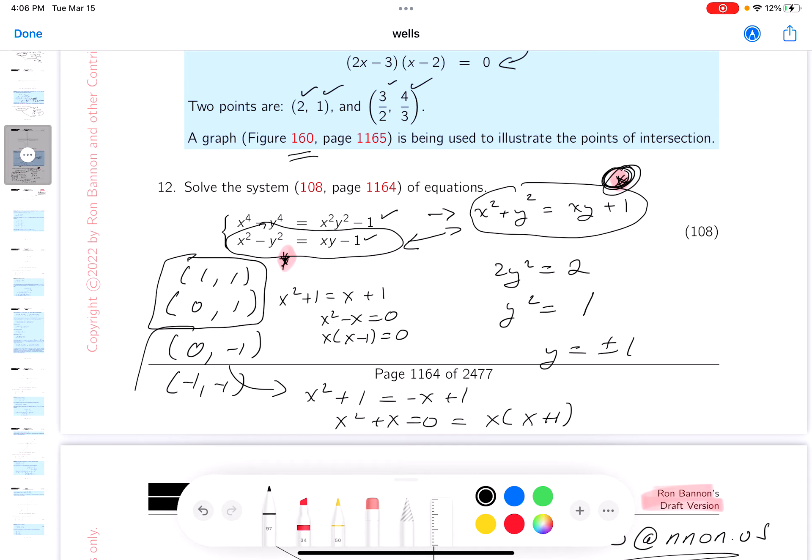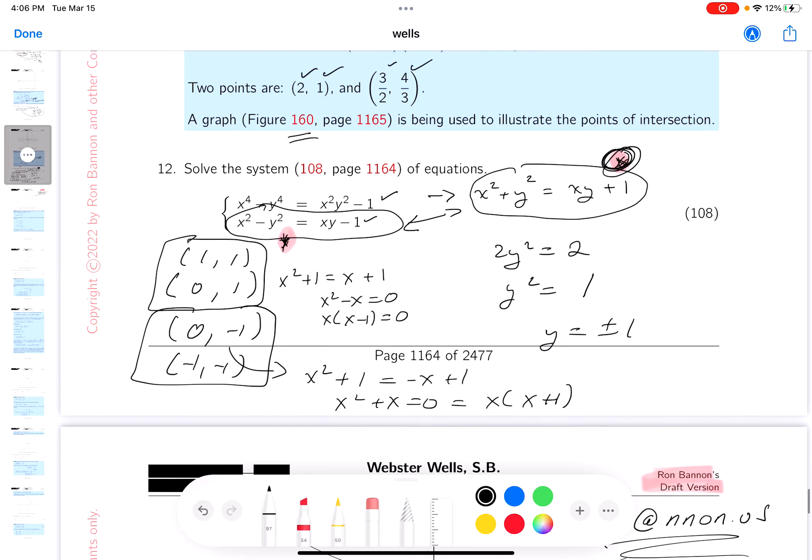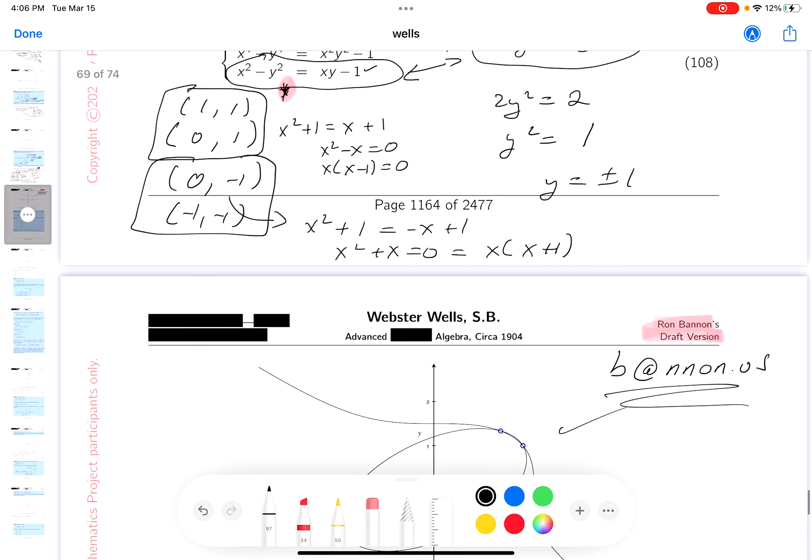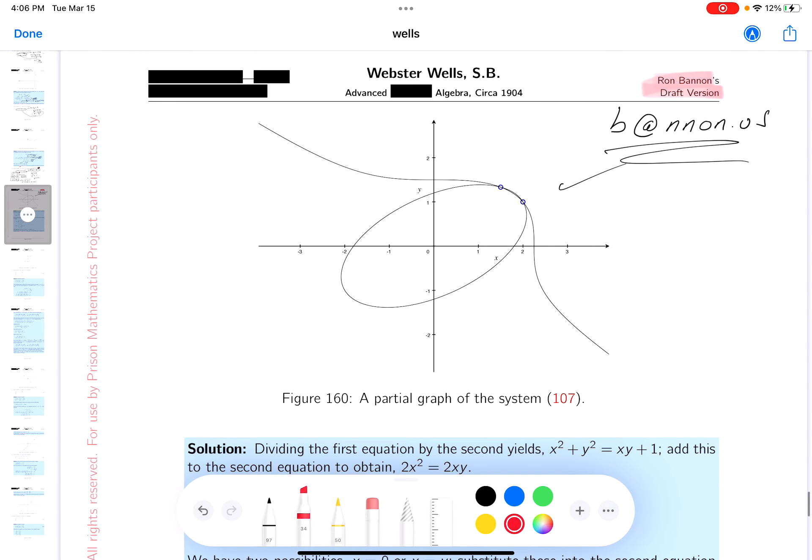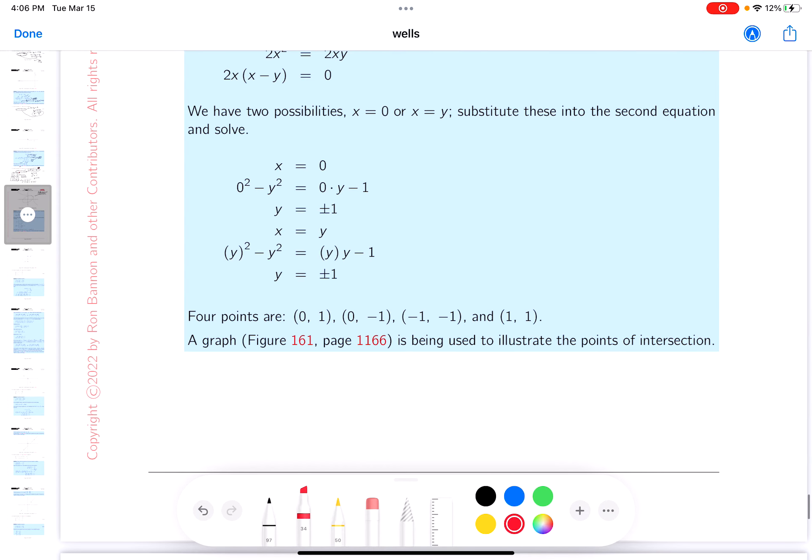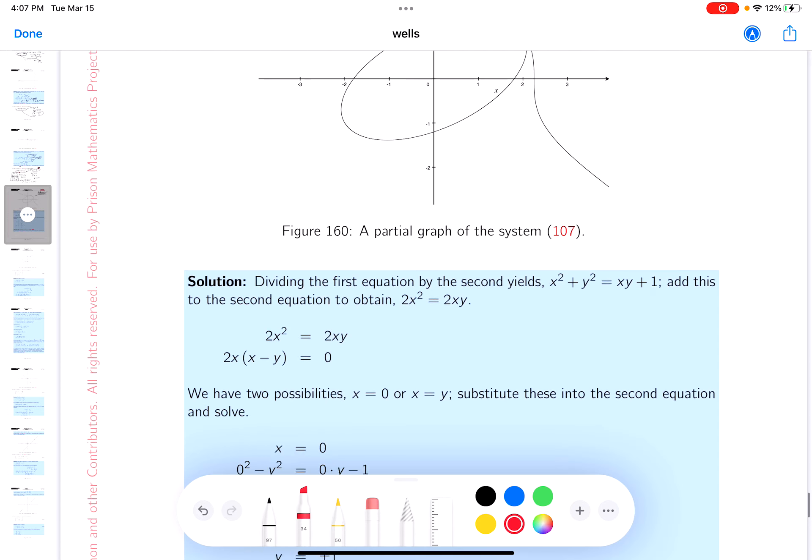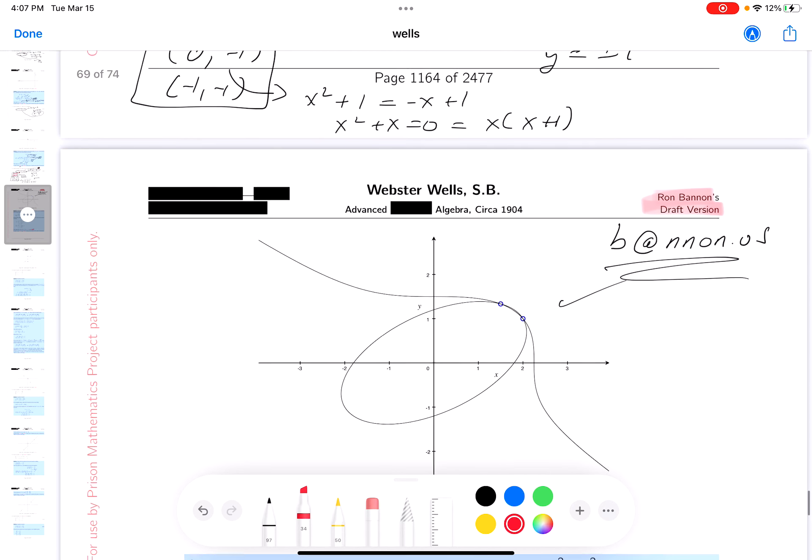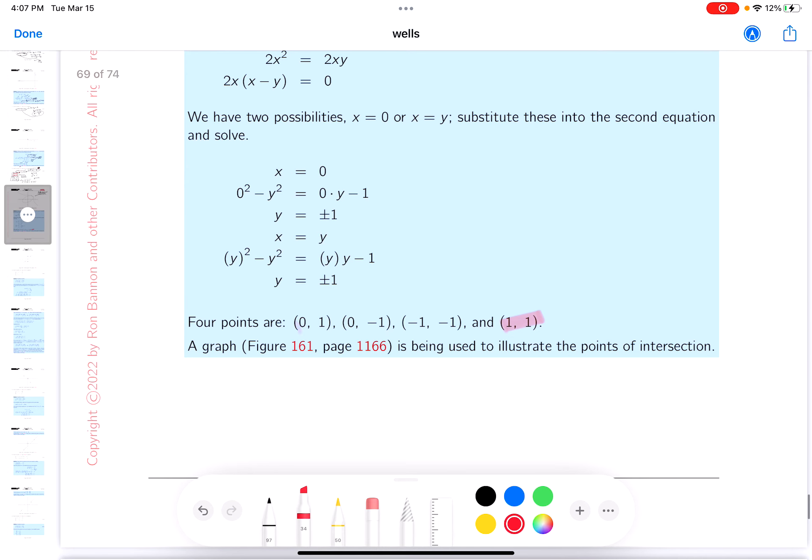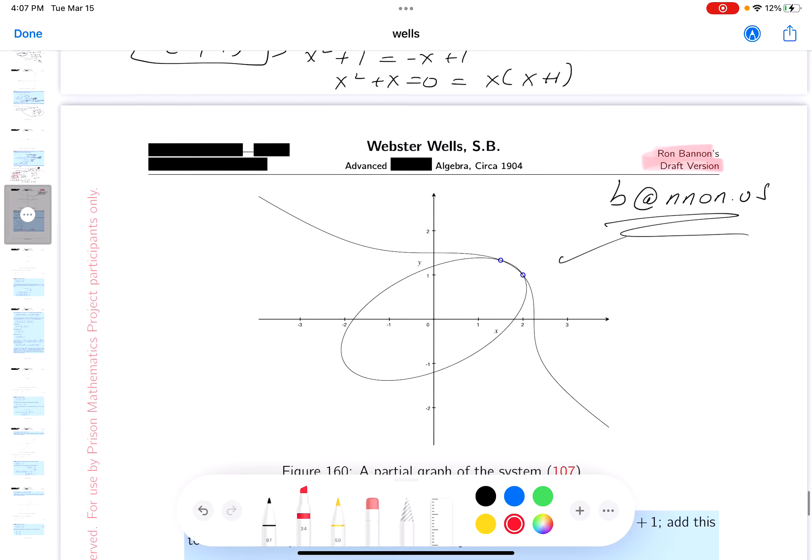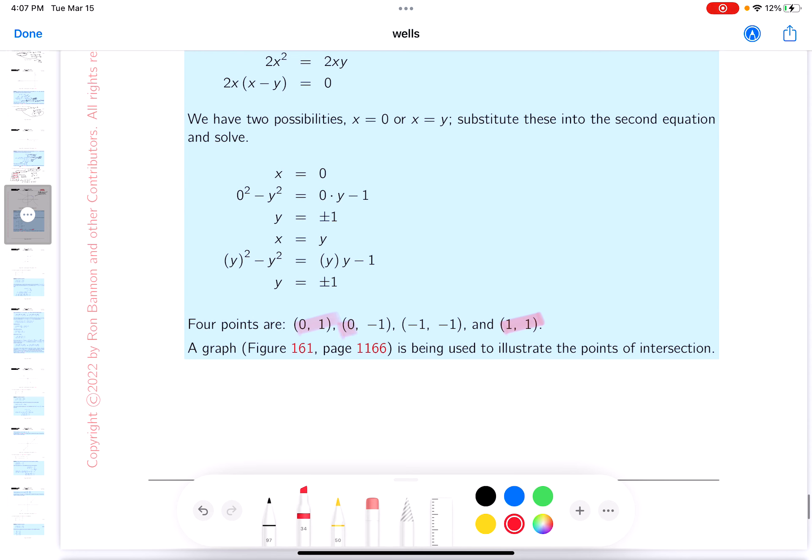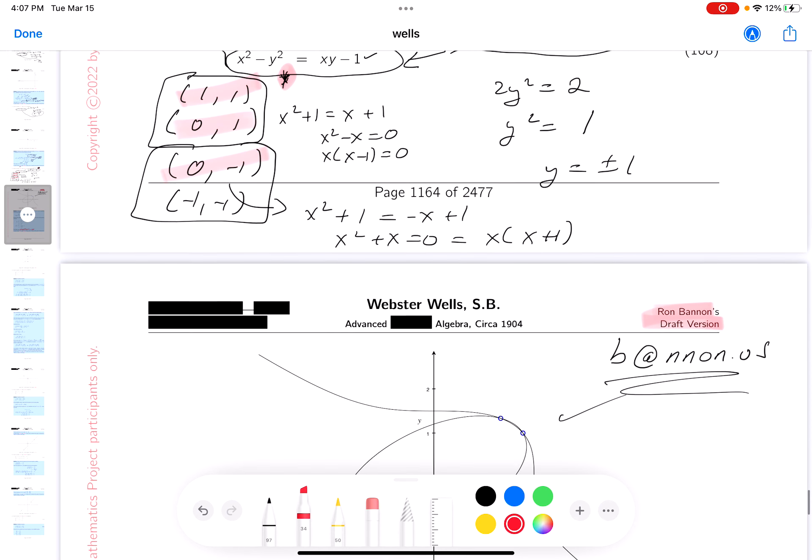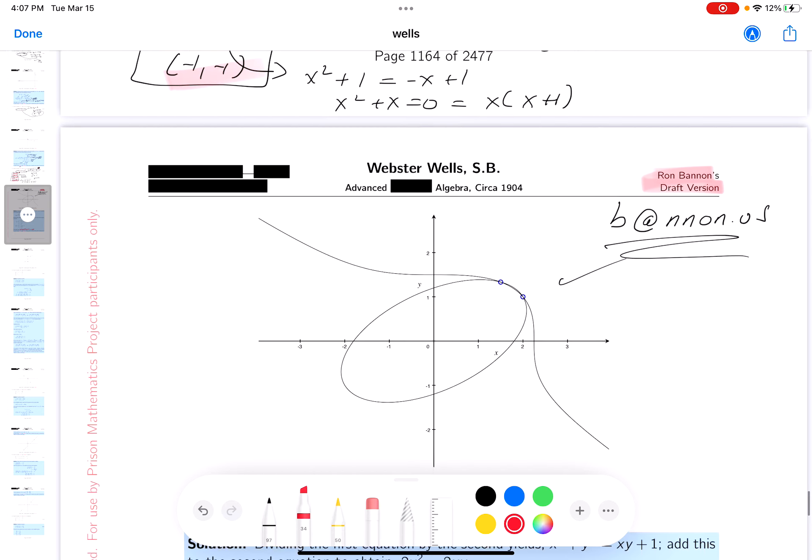Let's go to the key. Really wasn't a bad problem to do. I'm gonna look at the key. Did they get (1, 1)? Yep. Did they get (0, 1)? Yep. Did they get (0, -1)? Yes. Do they get (-1, -1)? Yes. I got them all.